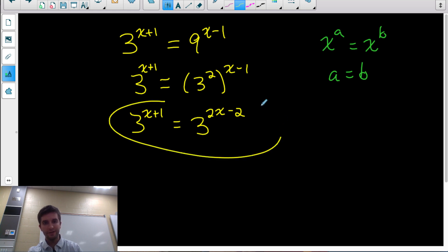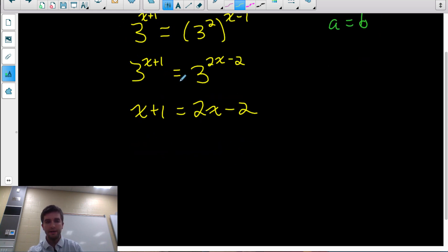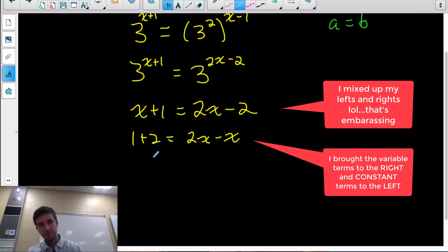So now what I have right here looks exactly like this: power equals power where the bases are the same. The only way this can be true, since the bases are already the same, would be if the exponents were also the same thing. So set the exponents equal and now solve for what value of x makes that true. We now just have a linear equation to solve. Rearrange, I would bring all the x's to the left and all the constant terms to the right, so 1 plus 2 equals 2x minus x, and I figure out x is 3.